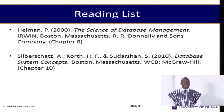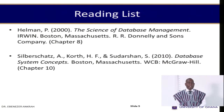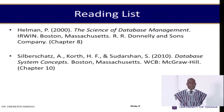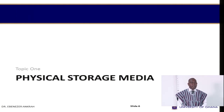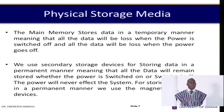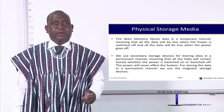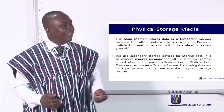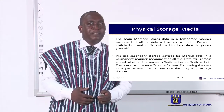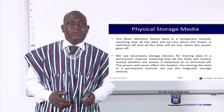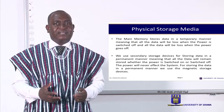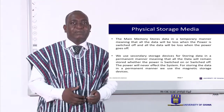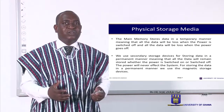For this session, the reference lists will be made available on Sakai and other important and relevant materials for your perusal. Now let's start with the first topic, physical storage media. The main memory stores data in a temporary manner, and therefore there is a need to look at other permanent and non-volatile storage to keep data permanently. Therefore, we use the storage media or devices that are termed auxiliary or secondary storage devices for saving and storing data permanently.